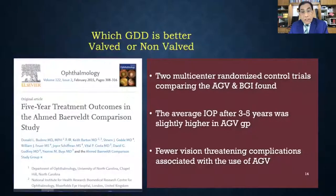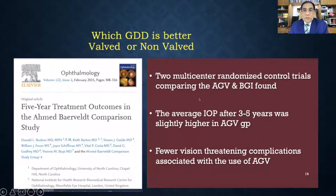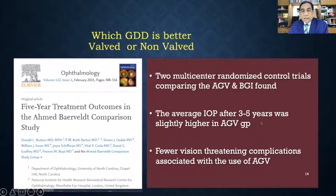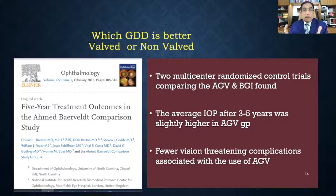Which device is better — valved or non-valved? The Ahmed Glaucoma Valve versus Baerveldt (ABC) study showed that for long-term success, non-valved devices are better, with IOP decreasing more effectively after three to five years. On the other hand, complications are fewer with the valved device, the AGV. Both devices have their pros and cons.